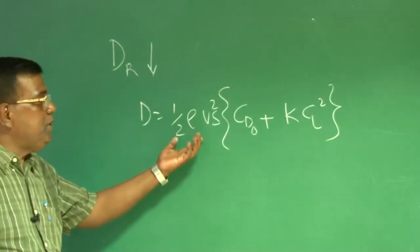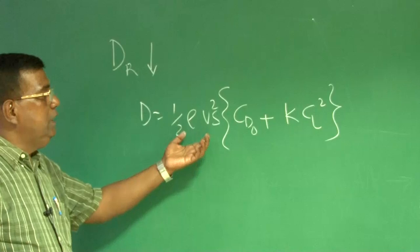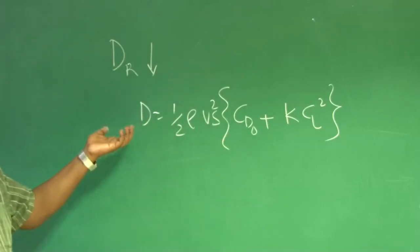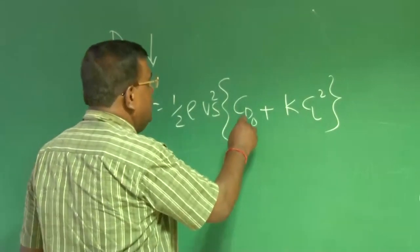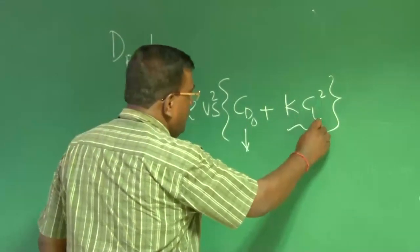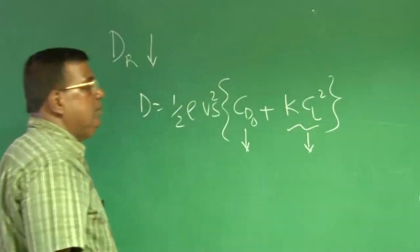So, for a given dynamic pressure, you could see that if I want to really minimize drag, then I have to handle CD0. This gentleman should go and this contribution should also go down.